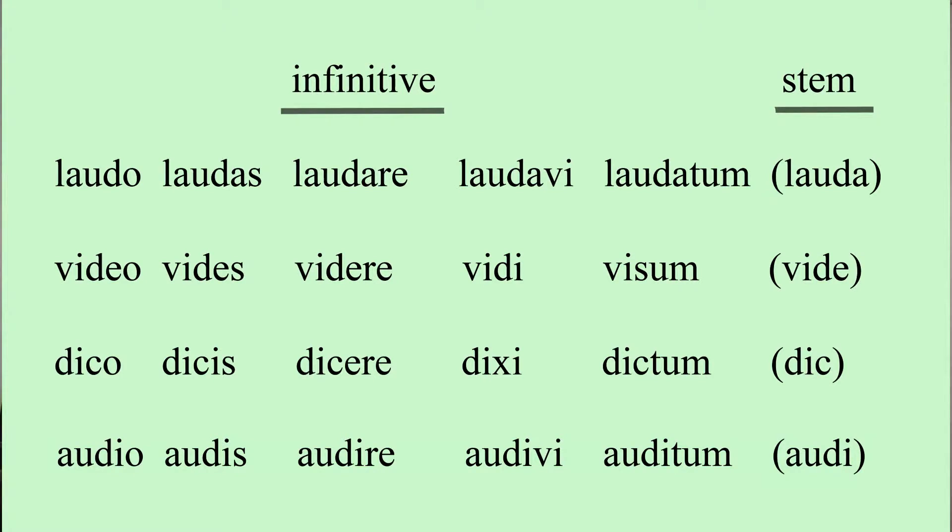Participles are words that are derived from verbs, and they are called participles because they sort of participate in the character of nouns or of adjectives. In English we usually add the ending '-ing', such as 'to see' and 'seeing', or 'to speak' and 'speaking'. In Latin we add the letters 'ns' to the stem of a verb. Let's take a look at some specific examples.